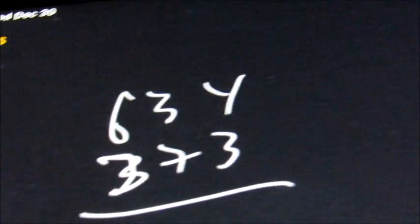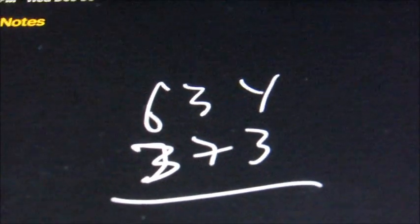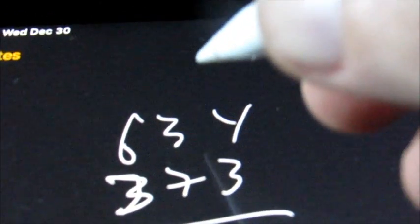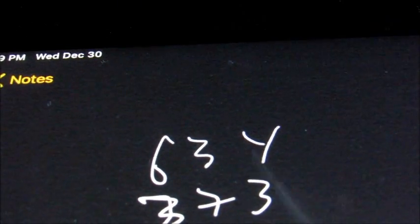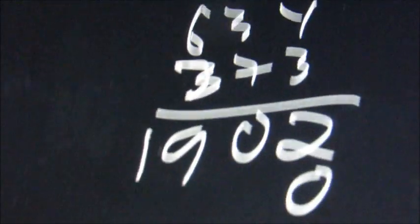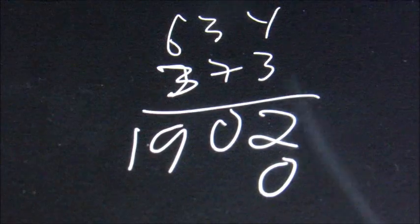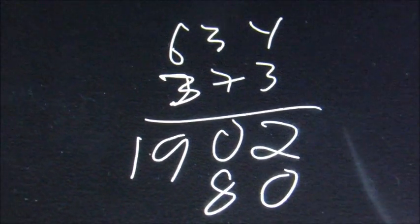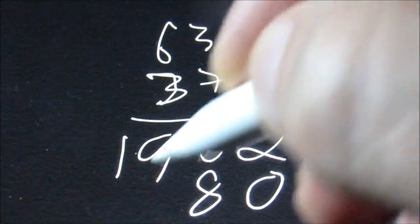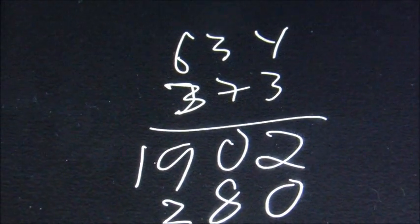Let's say we have some that are 3 digits each. So 634 times 373. We're going to do it the same way, one line at a time. 3 times 4 is 12. 3 times 3 is 9, plus 1 is 10. 3 times 6 is 18, plus 1 is 19. Put a placeholder 0. And we have 7 times 4 is 28. 7 times 3 is 21, plus the 2 is 23. 7 times 6 is 42, plus the 2 is 44.